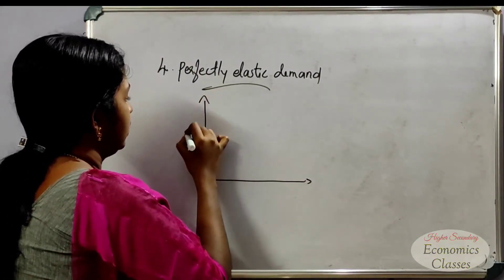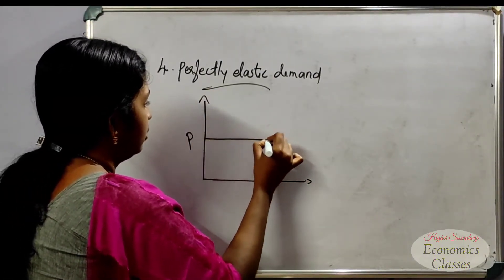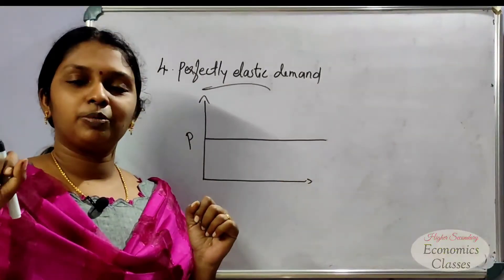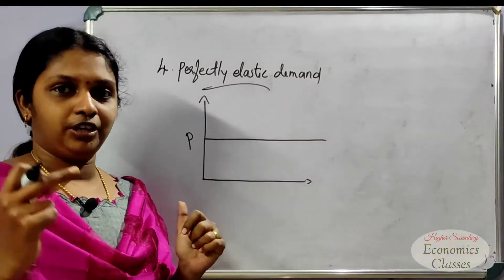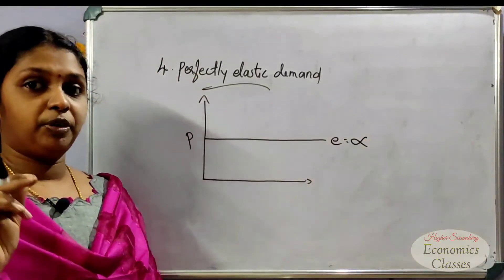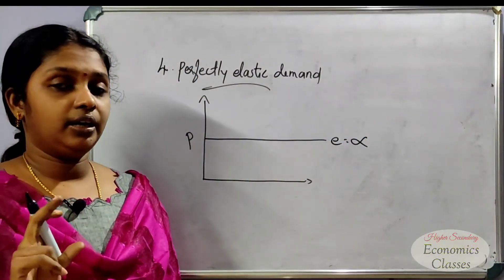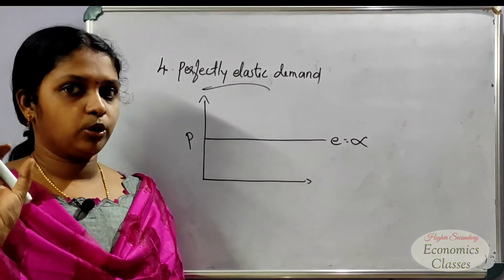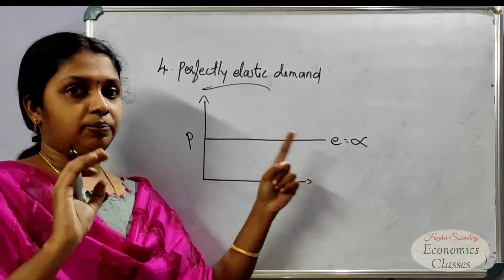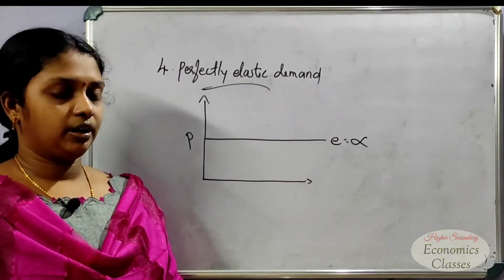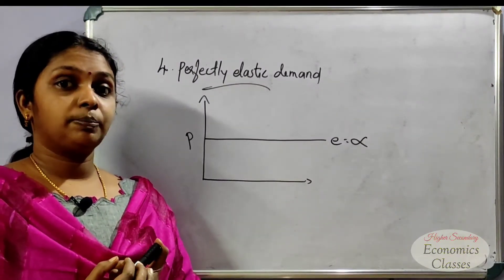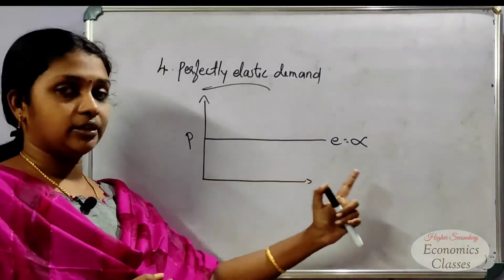In perfectly elastic demand, even an infinitesimally small change in price causes demand to change infinitely. The elasticity value is infinity. This means the commodity is perfectly elastic.